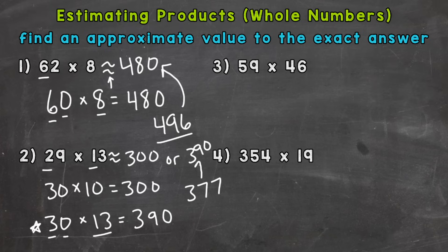So you can see that our second estimate was a little closer. Now if you use 300 for your estimate, that's fine. But again, it's not as close as our second one. So let's move on to number three, where we have 59 times 46.